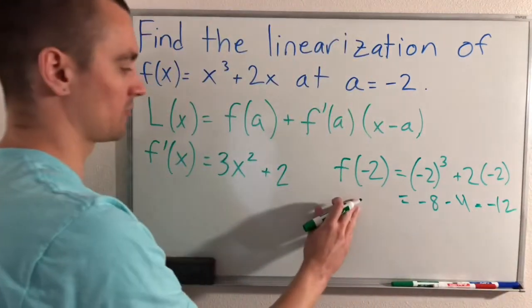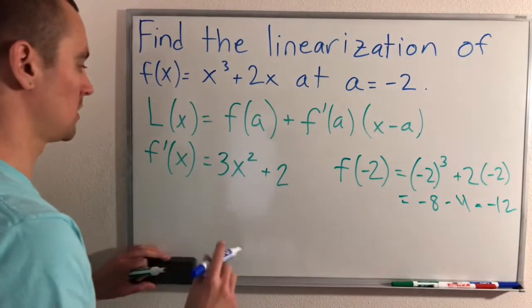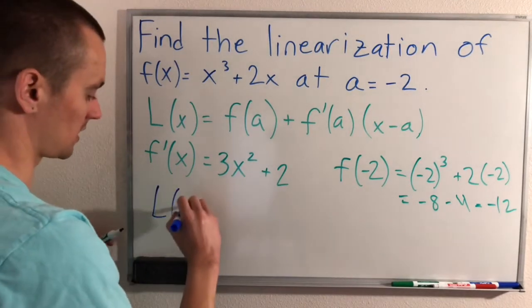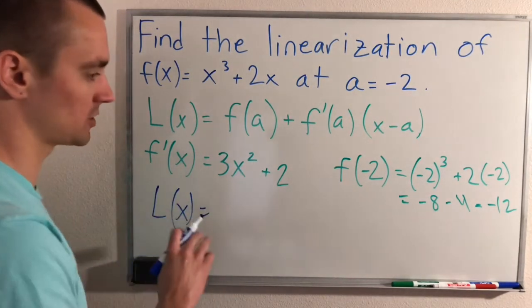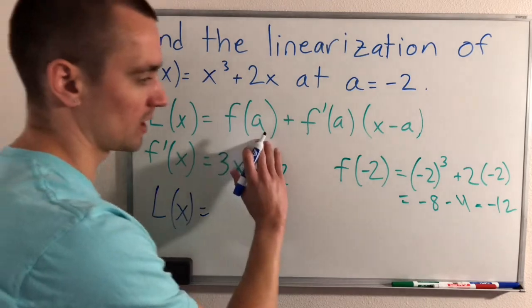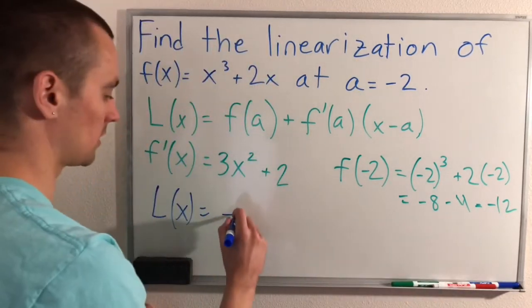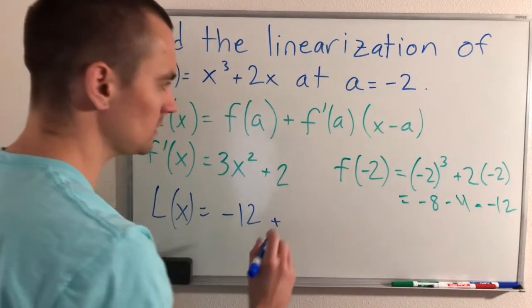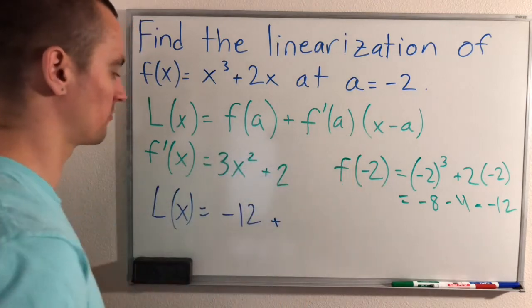So f(-2) is negative 12, so let's start plugging that in down here. If we're getting our linearization of f, f(-2), we're just going to put in negative 12 for that, and then we're going to get plus f'(-2).